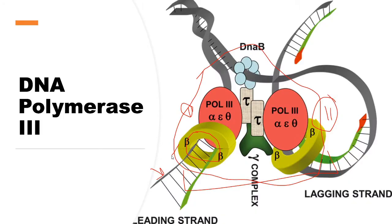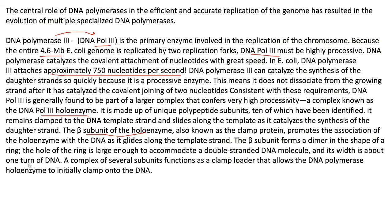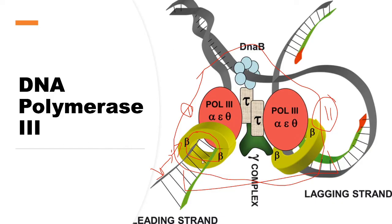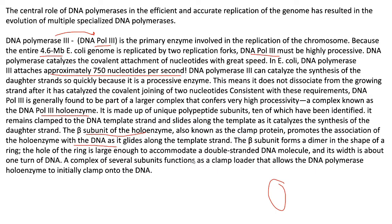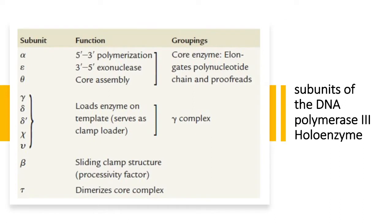The beta part starts gliding along the template strand to help synthesize the new DNA. The beta subunit forms a dimer in the shape of a ring. The hole of the ring is large enough to accommodate a double-stranded DNA molecule — both the template strand and the non-template strand pass through it. A complex of several subunits functions as a clamp loader that allows the DNA Pol 3 holoenzyme to initially clamp onto the DNA.